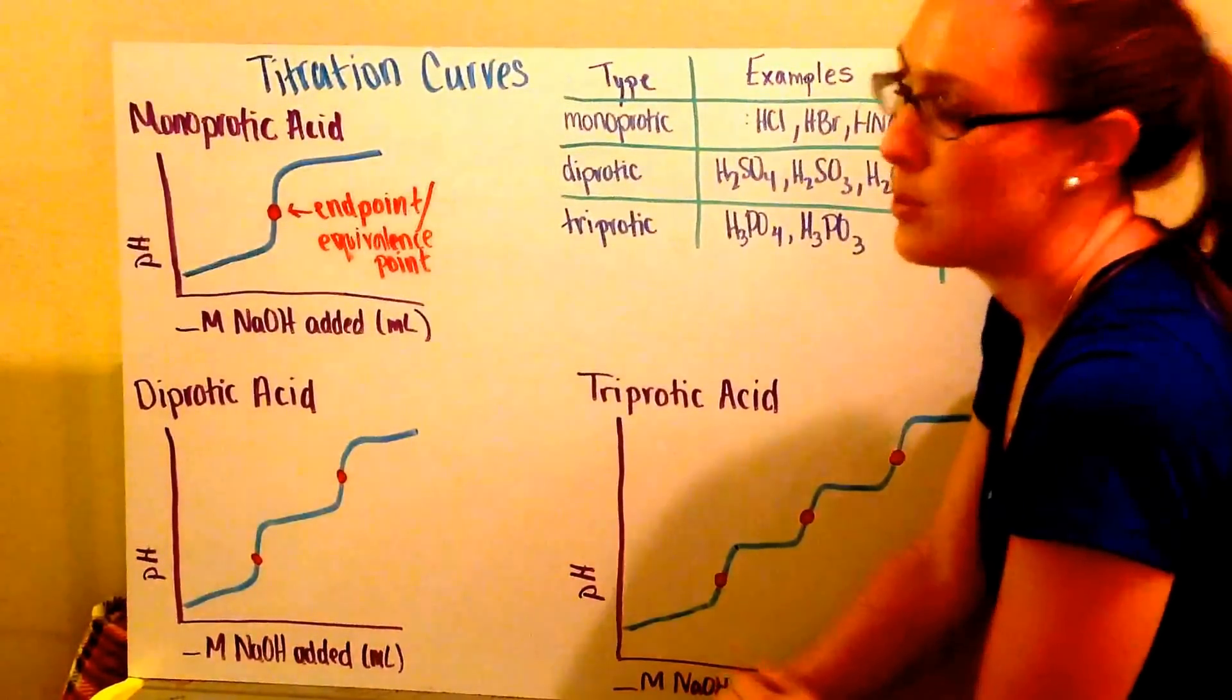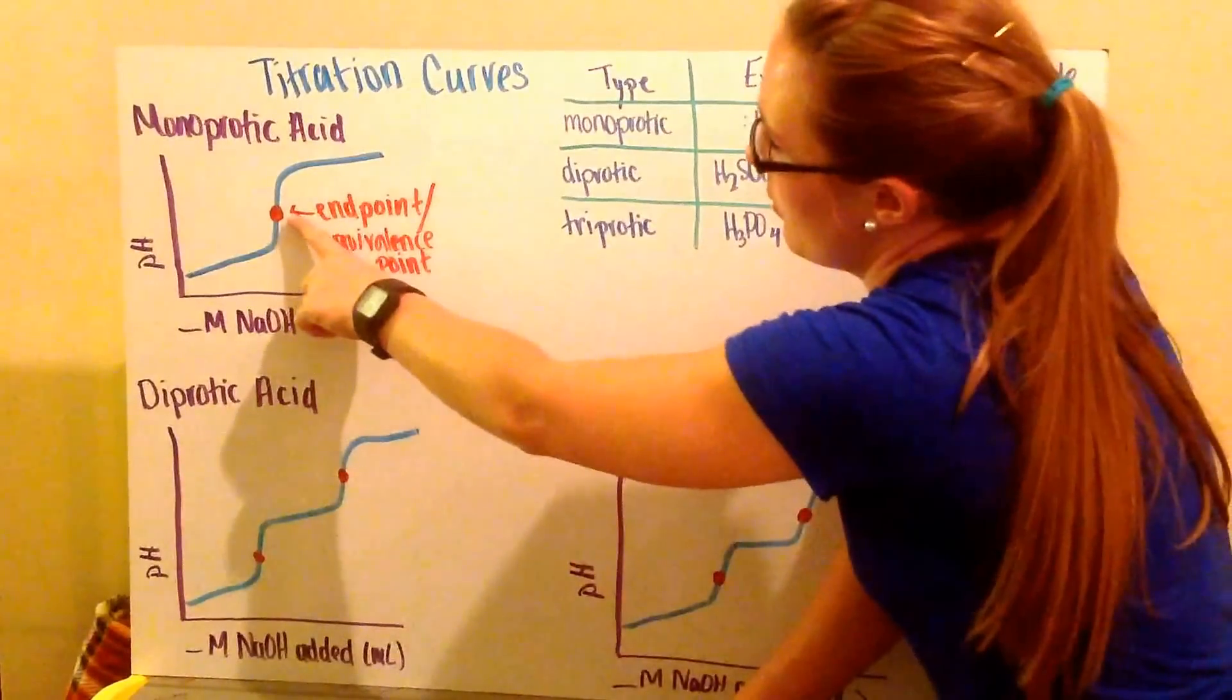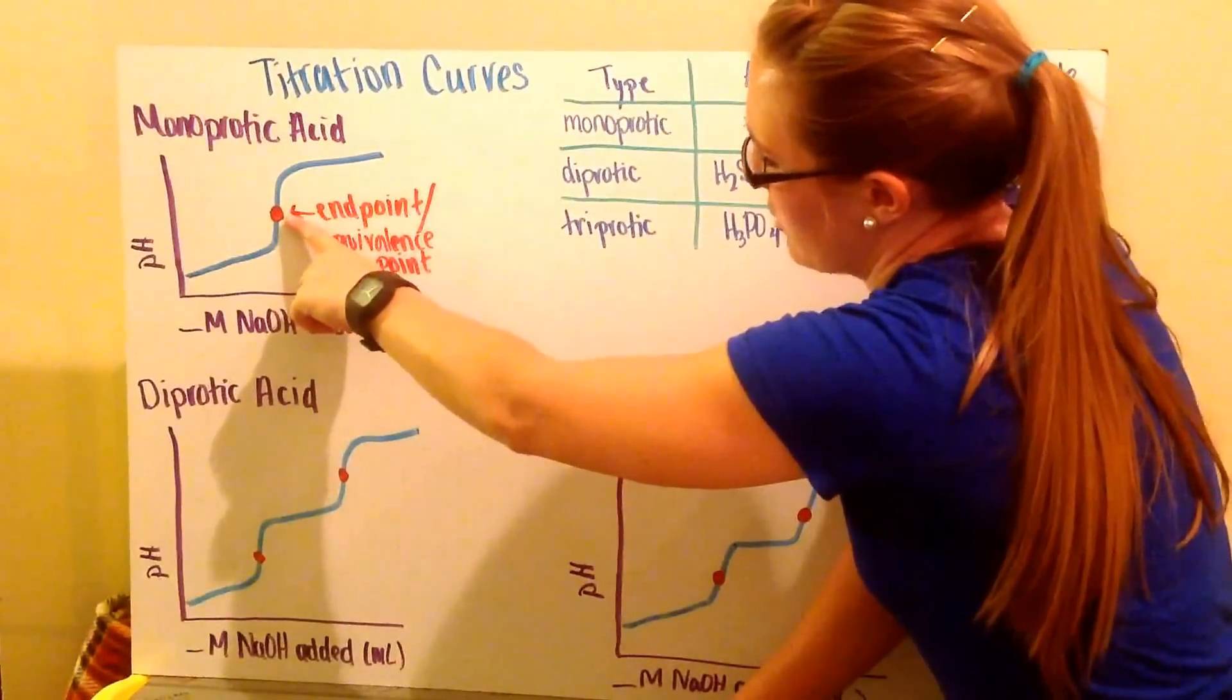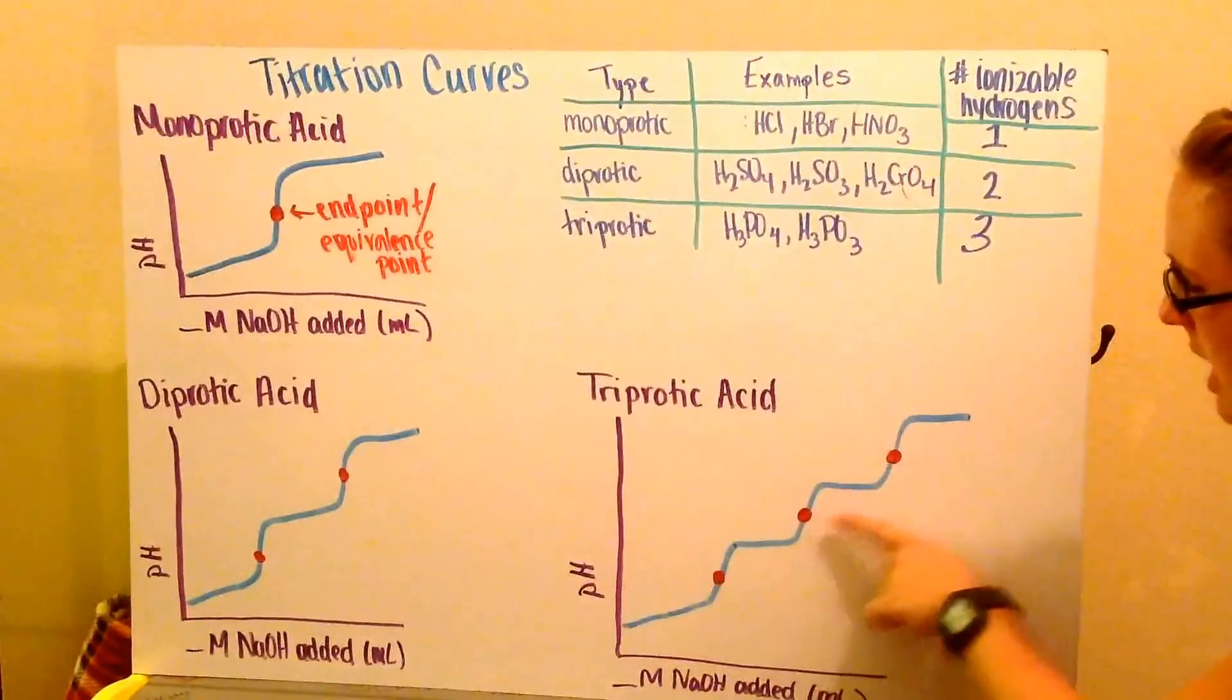This is where my solution has reached its endpoint. My number of hydrogen ions equals my number of hydroxide ions in solution. A monoprotic acid will have one point of inflection, a diprotic acid will have two, and a triprotic acid will have three.